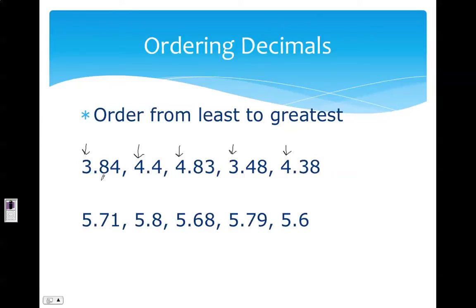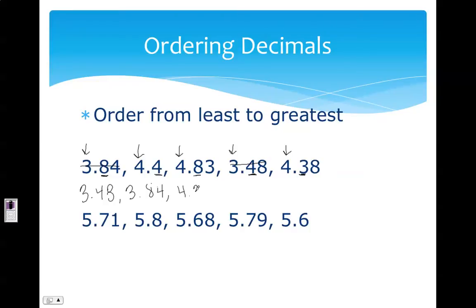I know three is smaller than four, so I'm going to start with my whole numbers of three. Since I have more than one, I then look at the tenths place in those numbers — I have an eight and a four. Four is smaller than eight, so 3.48 will be my least number. I mark it out when I'm finished so I won't reuse it. The only other whole number with three is next, so 3.84 — mark it out. All the others have four as a whole number, so I look at the tenths place and see four, eight, and three. Three is the smallest, so I put 4.38 — mark it out — then 4.4, and finally 4.83. There it is, from least to greatest.